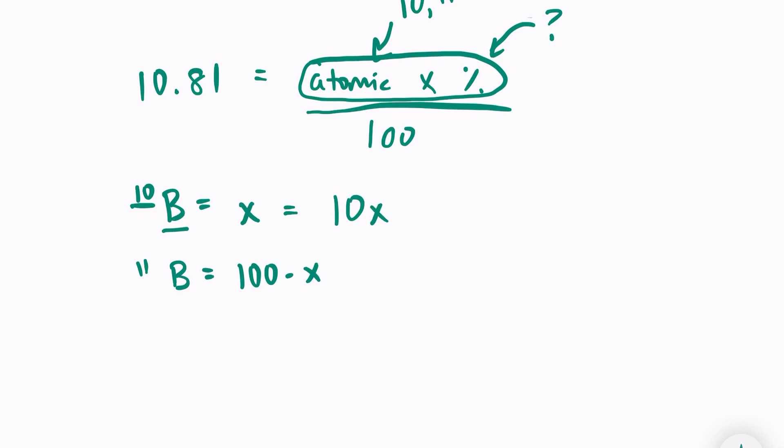And for boron-11, I have to multiply my 11 into both of these factors. So 1100 minus 11x. And to find the total mass, I'm going to have to add these two together.